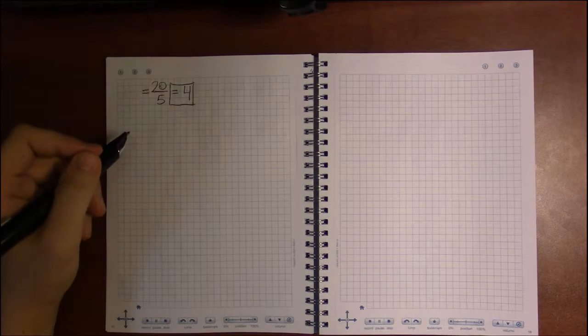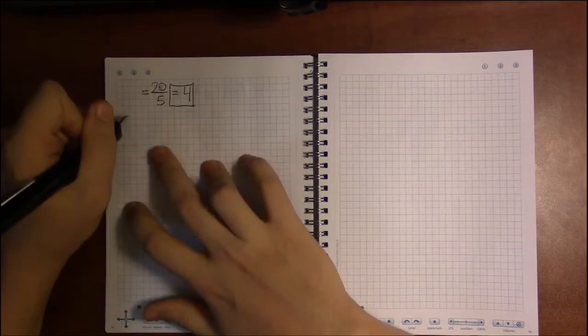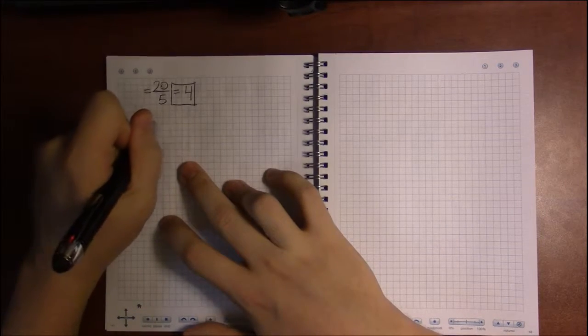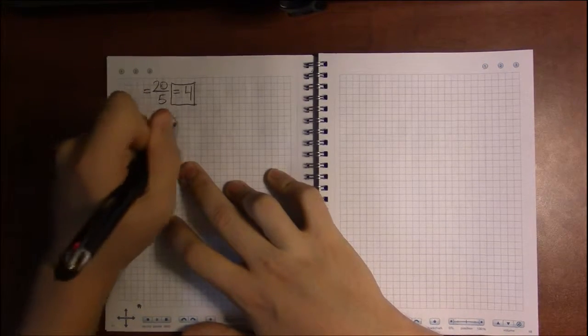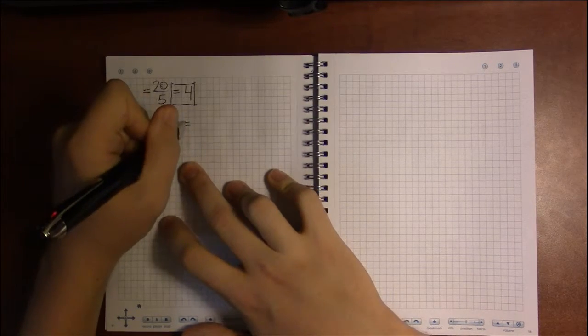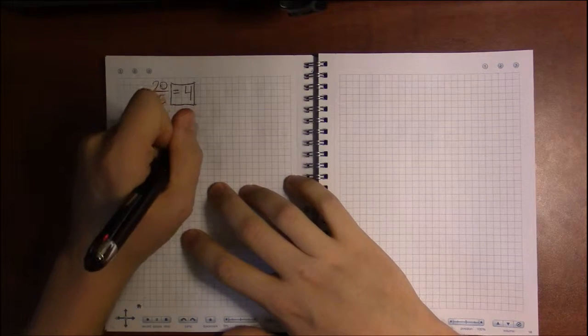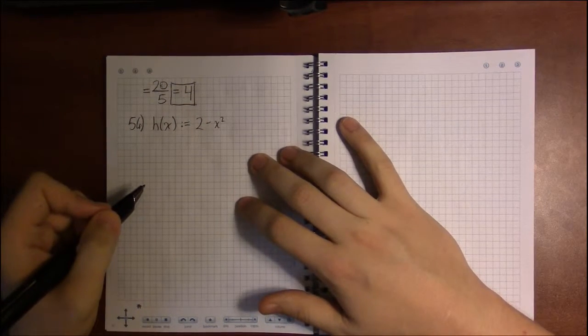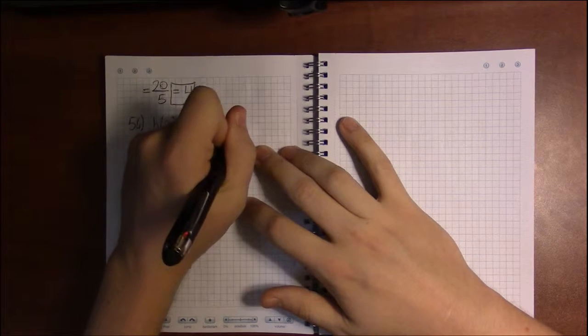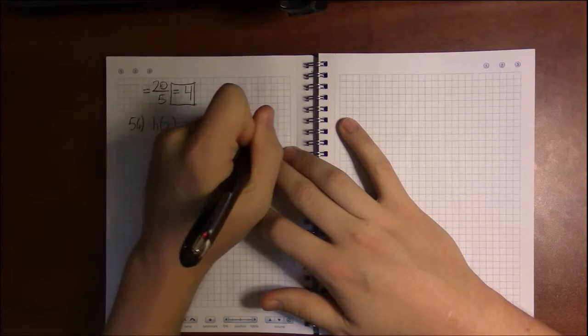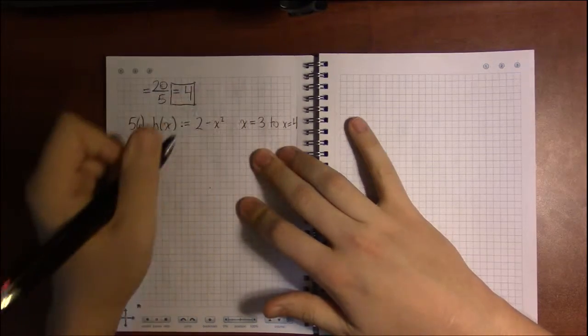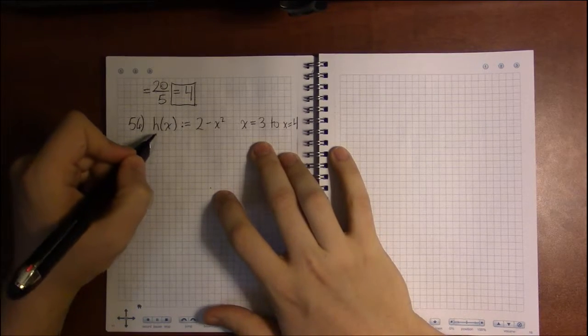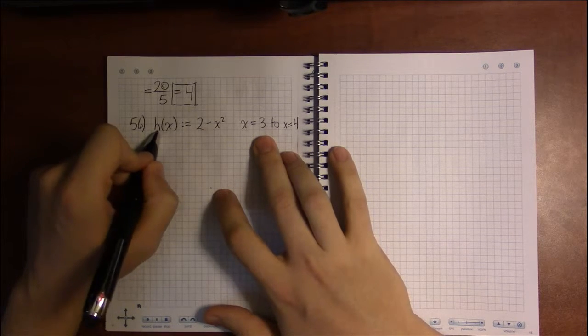Now let's look at 56. So on 56, the function we're given is h(x), and the book defines it to be 2 - x², and we're supposed to compute the average rate of change over the interval where x goes from 3 to 4.